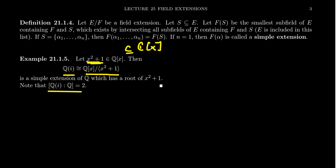The field we construct with Kronecker's theorem is equivalent to Q(i), and this shows that the field extension has degree two. More generally, the field formed in Kronecker's theorem will have degree at most the degree of the polynomial — and in particular, for an irreducible polynomial, the degree of the extension equals the degree of that polynomial. We'll define that more carefully at the end of this lecture.